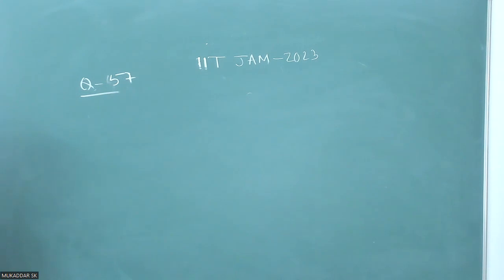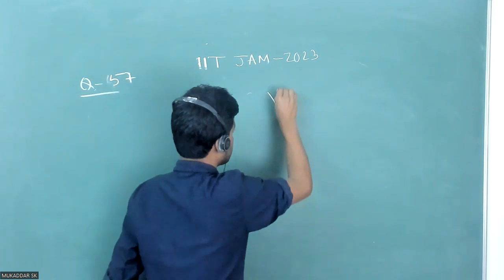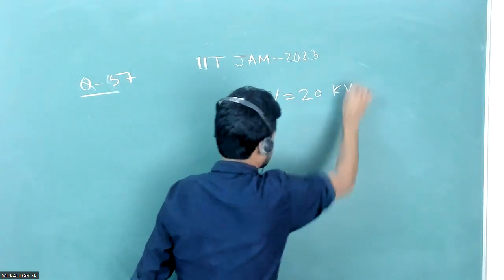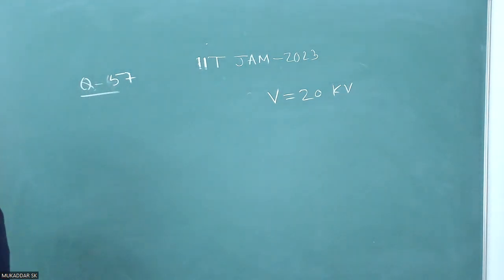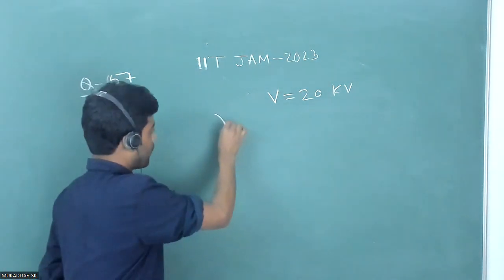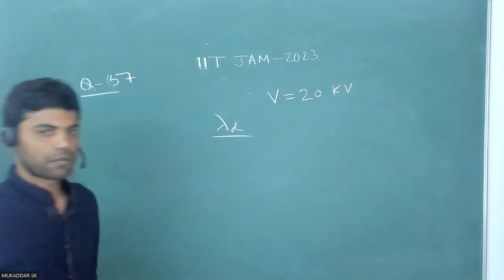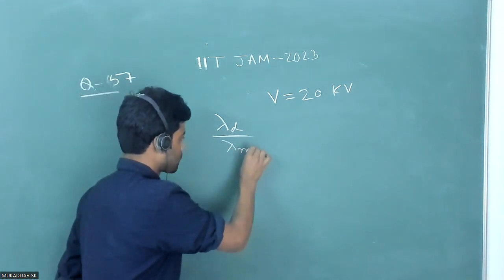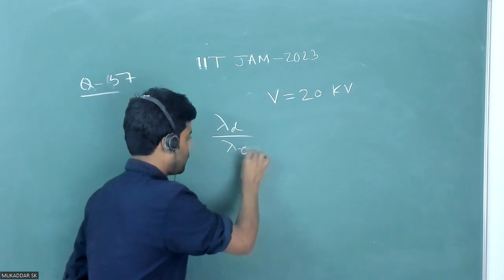The question is given that the potential difference applied across an X-ray tube is 20 kilovolt. We need to calculate the ratio of de Broglie wavelength of electron to that of minimum wavelength of X-ray.